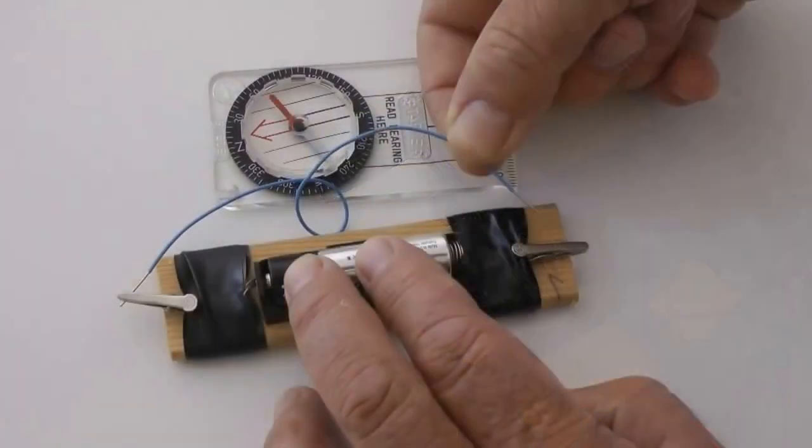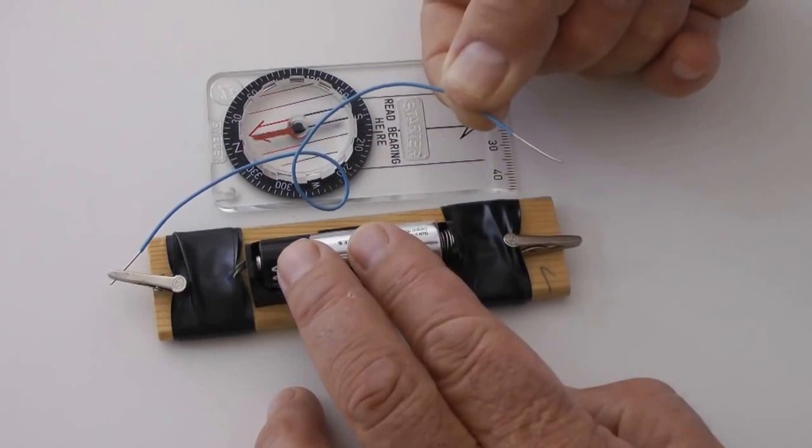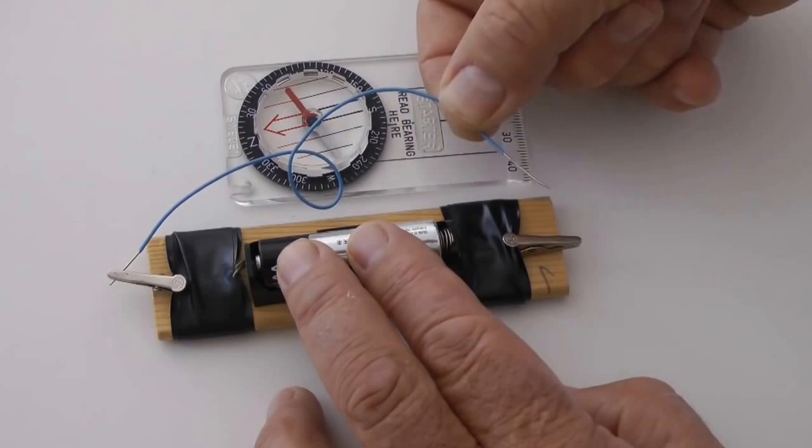Solenoids function by using the magnetic field that appears when electricity flows through a coil of wire. The moving needle in this compass reveals the presence of a magnetic field.